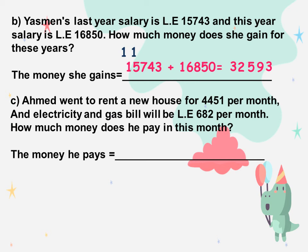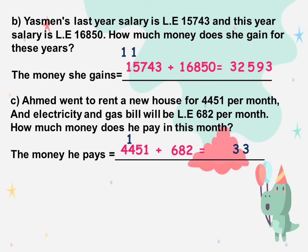The next: Ahmed went to rent a new house for 4,451 per month, and electricity and gas bill will be 682 per month. How much money does he pay this month? The money he pays equals 4,451 plus 682. Ones: 1 plus 2 equals 3. 5 plus 8 equals 13: write 3 and carry up 1. 1 plus 4 is 5. 5 plus 6 equals 11: write 1 and carry up 1. 1 plus 4 equals 5.